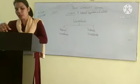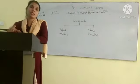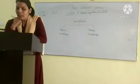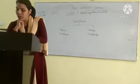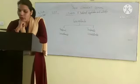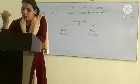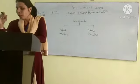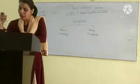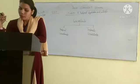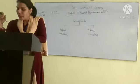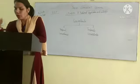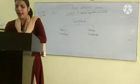Grasslands are mostly formed in regions of low rainfall. Grasslands form where rainfall is lower. As the amount of rainfall decreases, forests give place to grasslands.